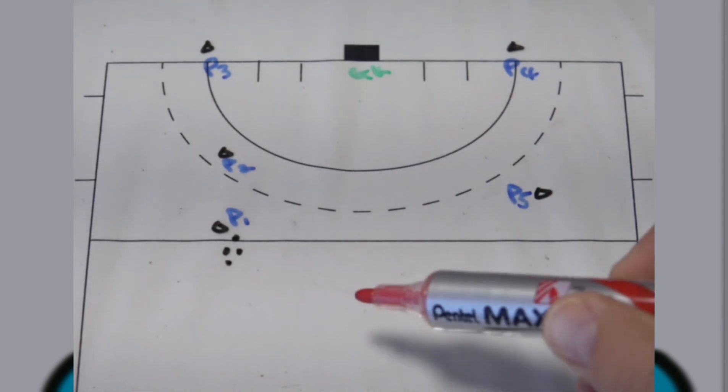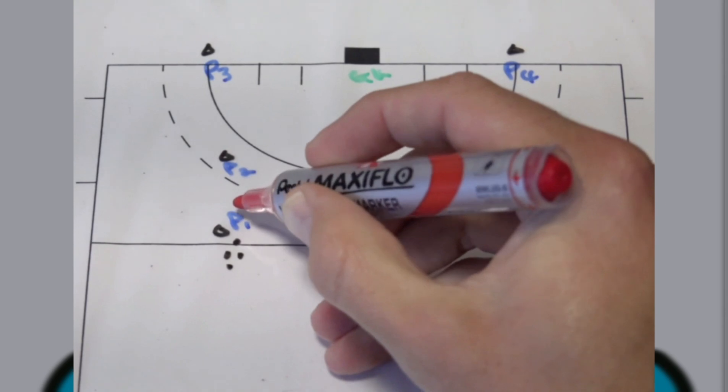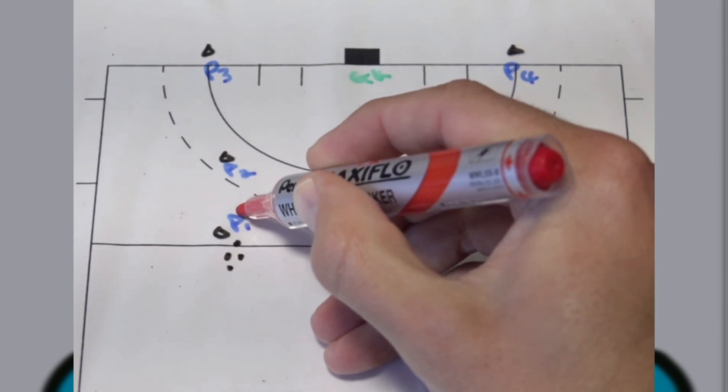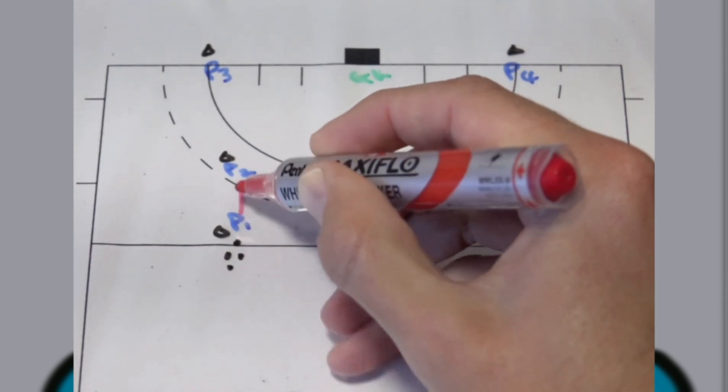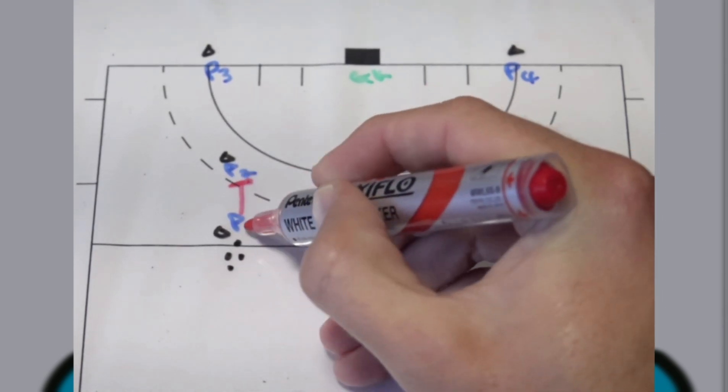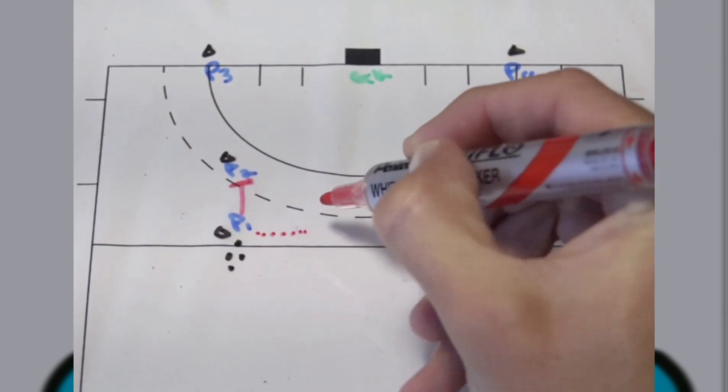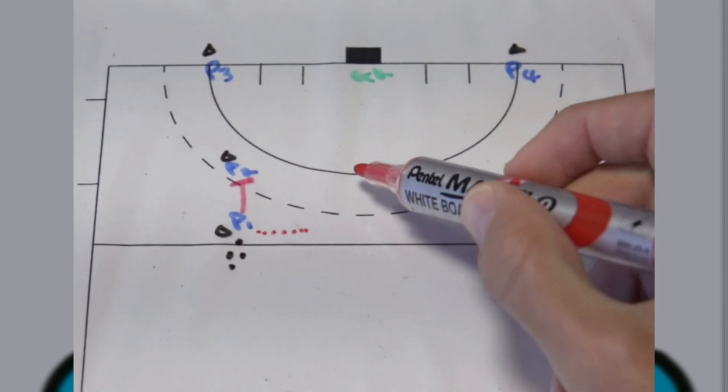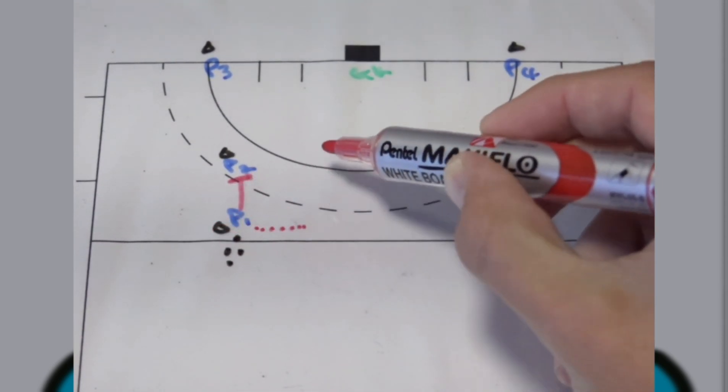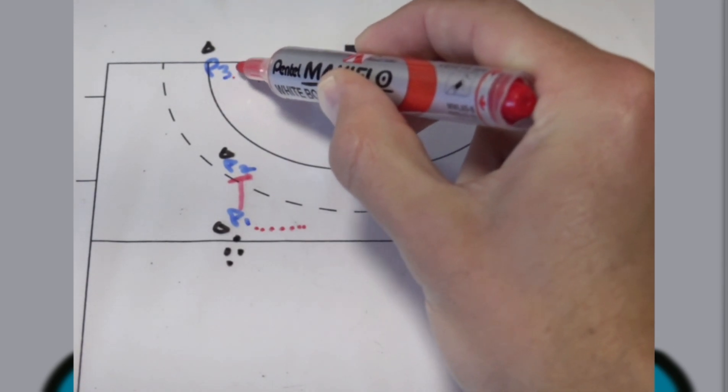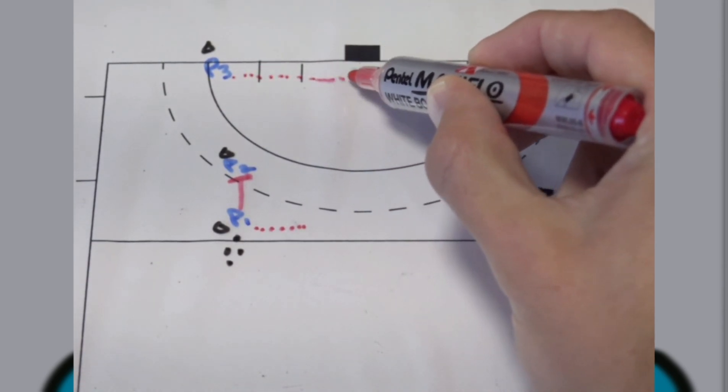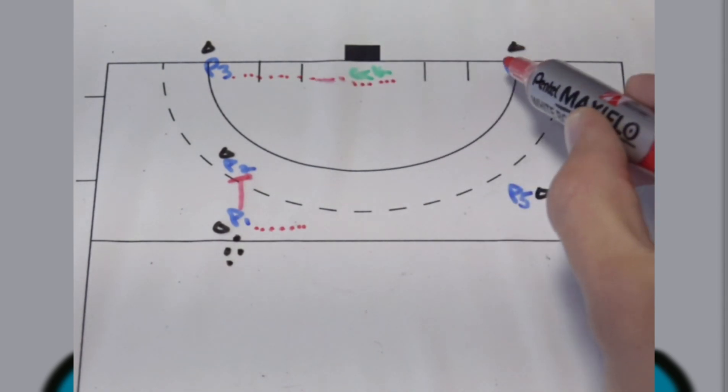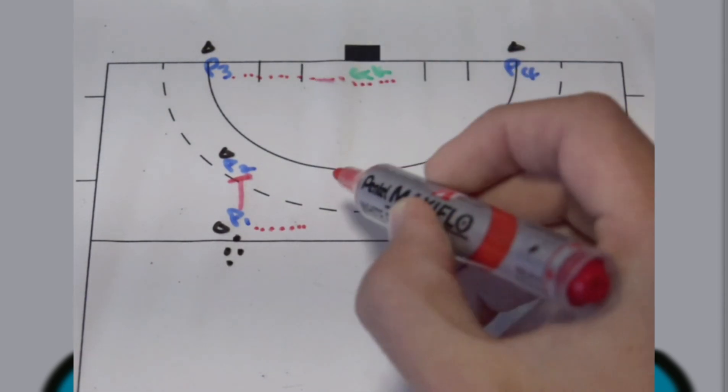But how it will work is player one will pass the ball to player two that's posting up. When that happens player one will then lead into the middle of the field. While this is happening player three will start leading across the goalkeeper and across the goal towards where player four is.